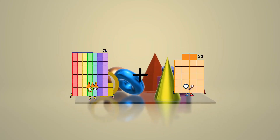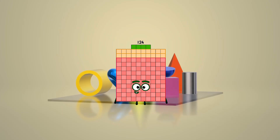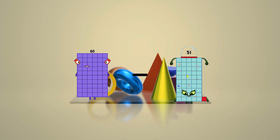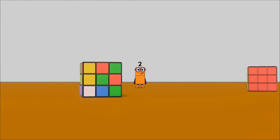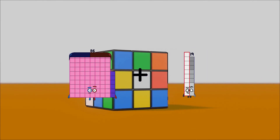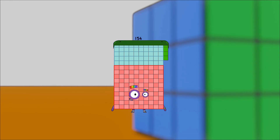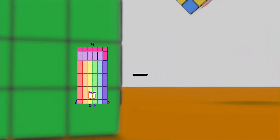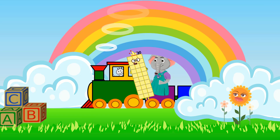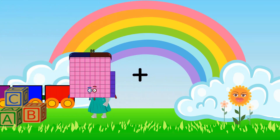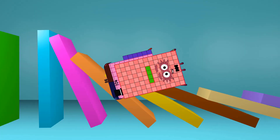73 plus 51 equals 124. 60 minus 58 equals 2. 86 plus 68 equals 154. 78 minus 48 equals 30. 86 plus 104 equals 190.